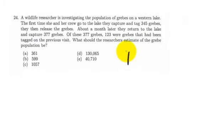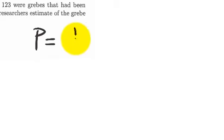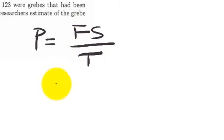The formula we'll be using is Fs over T. The F stands for the number in your first sample, which is 345.